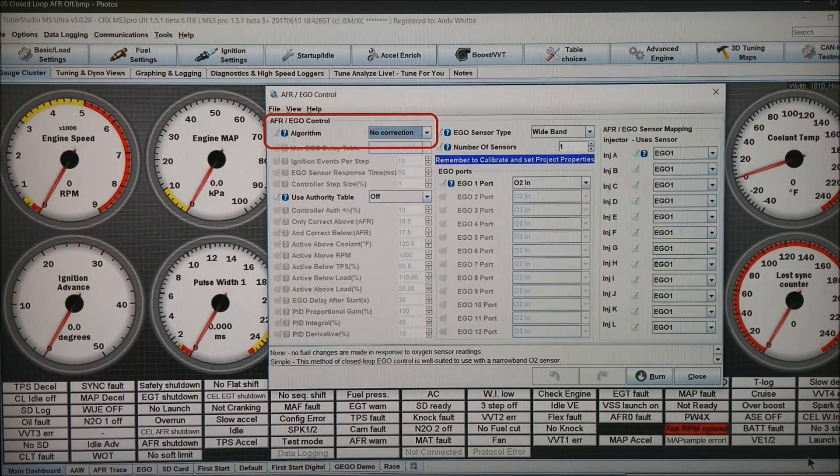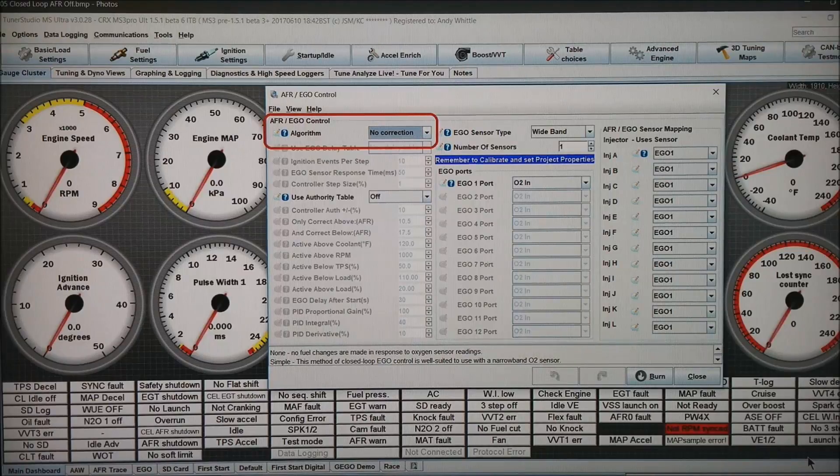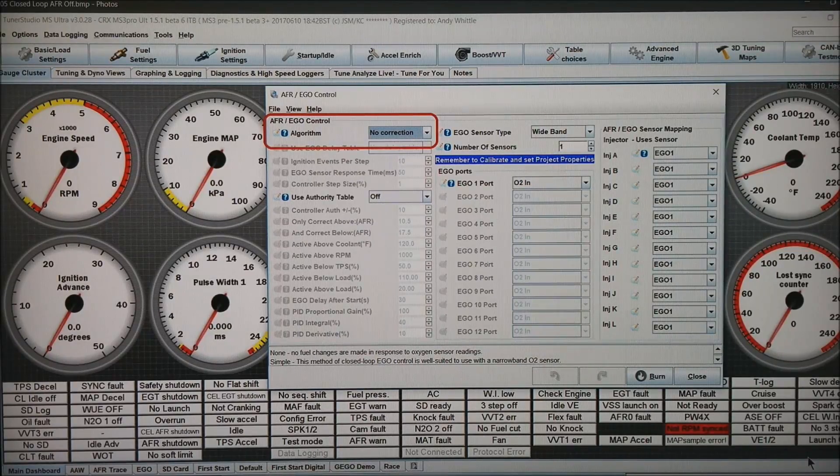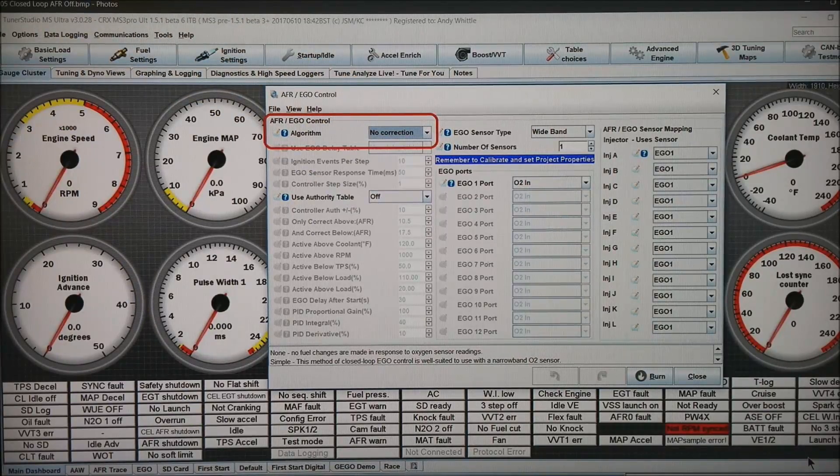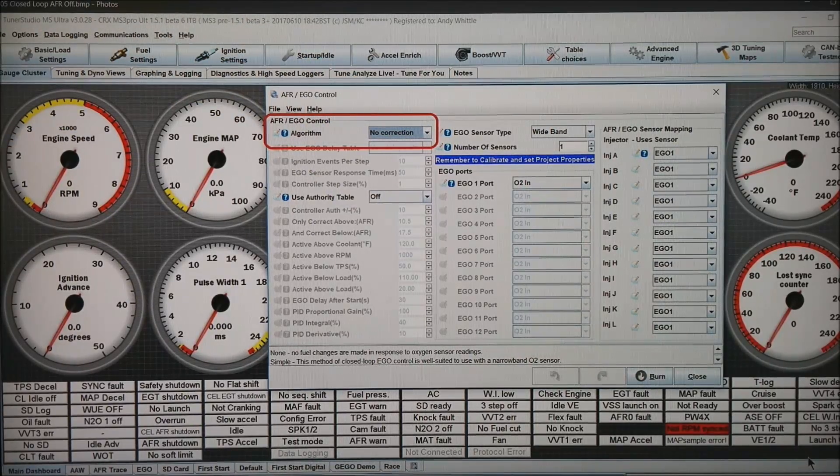I also want to go to the EGO control and under the algorithm, change it to no correction. The reason I do this is it just simply gets too confusing if your widebands are correcting all the time.